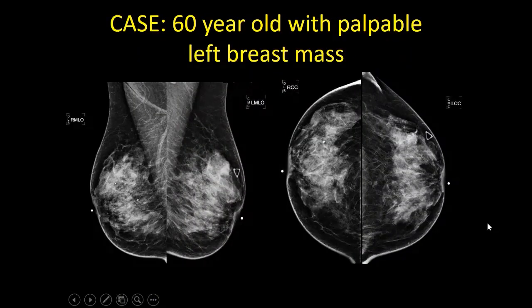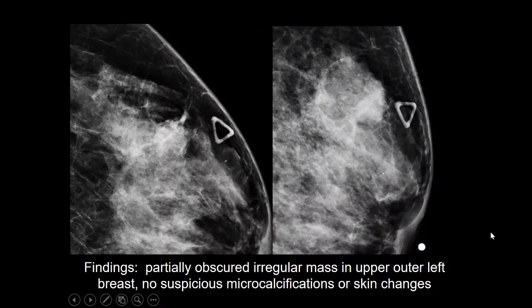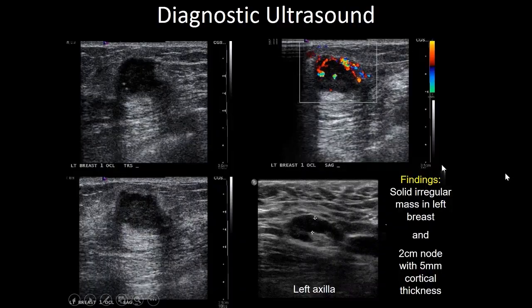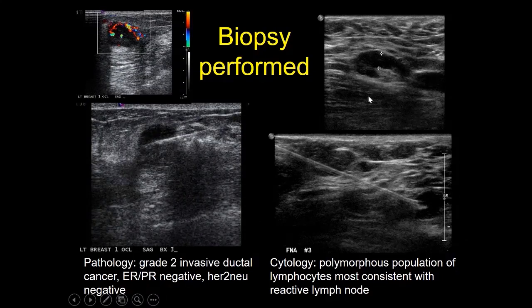Let's apply our basic anatomy principles to caring for this 60-year-old woman who presented with a palpable breast lump. A triangle was placed over the area she was bothered by, and you can sense there's a nodular asymmetry there. On the magnified images you get a much better sense of an irregular mass with no suspicious calcifications, although there are a few scattered calcifications, and no overlying skin changes or skin retraction. On ultrasound, there's a hypoechoic irregular mass with posterior acoustic enhancement, some echogenic foci suggesting calcifications, and internal vascularity. In the axilla, we found a concentrically thickened lymph node with a cortical thickness of 5 millimeters. Biopsies of both the mass and the lymph node were performed — the mass turned out to be a grade 2 invasive ductal cancer, and the lymph node turned out to be reactive.